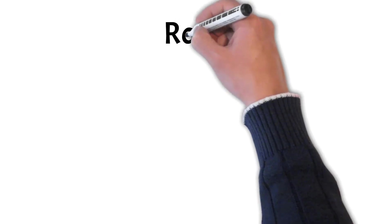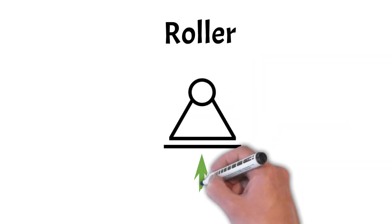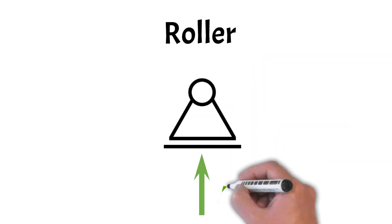The second type of support is the roller. Rollers have only one reaction force, a horizontal or a vertical, while they allow for rotation. The moment at the roller support is zero.